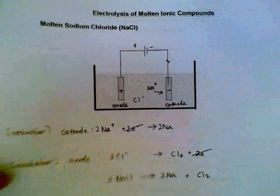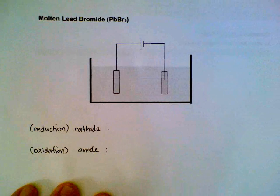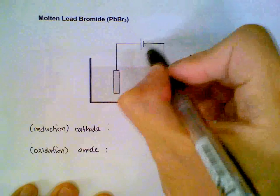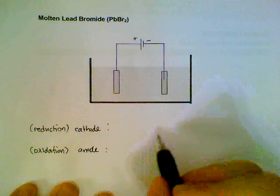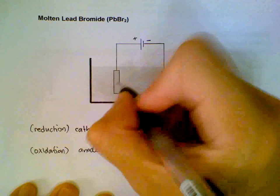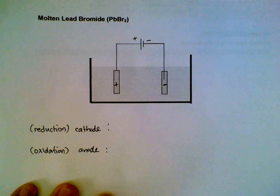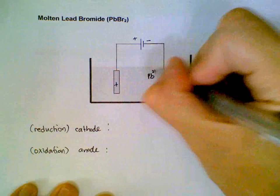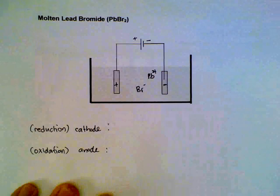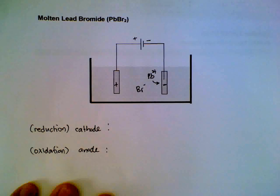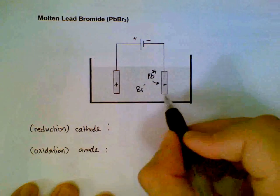Moving on to molten lead bromide. The same setup - we assign our negative and positive terminals. Shorter end negative, longer end positive. This electrode connected to the negative terminal is the negative electrode and positive electrode. The ions involved will be lead 2+ and bromide ions. The lead 2+ will be attracted to the negative terminal, this is our cathode.